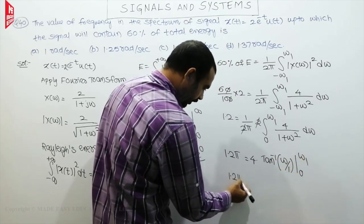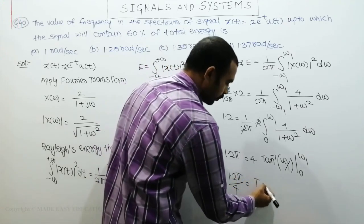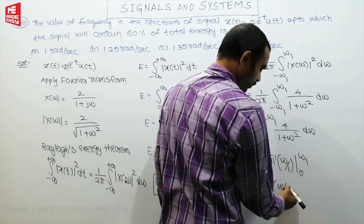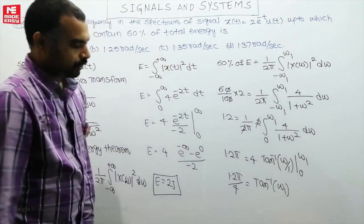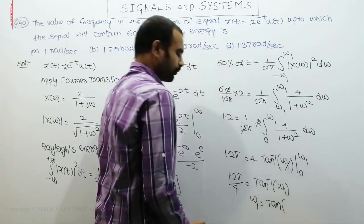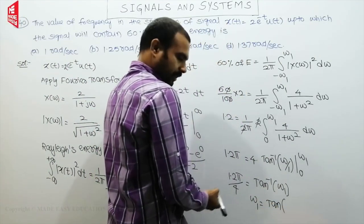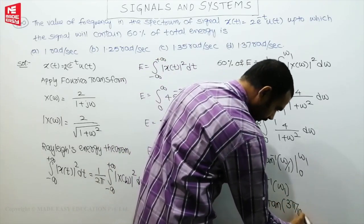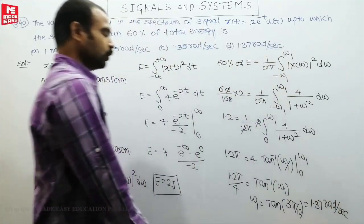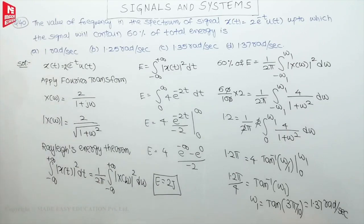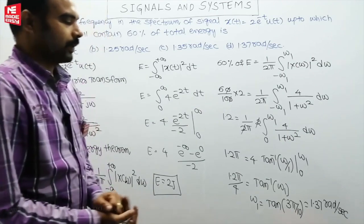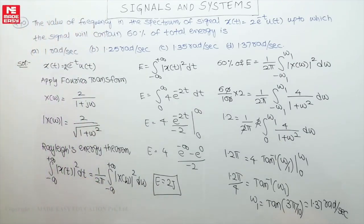The value simplifies to 1.2 = (4/2π)·tan⁻¹(ω₁), so (1.2π/4) = tan⁻¹(ω₁), since tan⁻¹(0) = 0. Therefore ω₁ = tan(1.2π/4) = tan(3π/10) = 1.37 radians per second. Put your calculator in radian mode to verify this result.